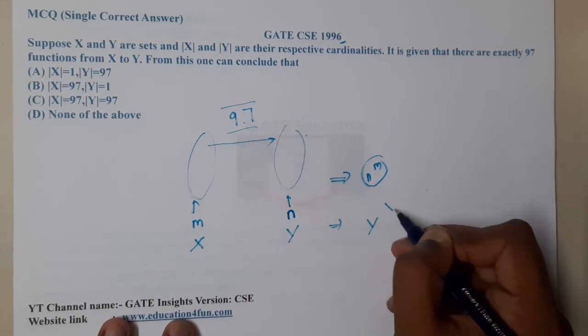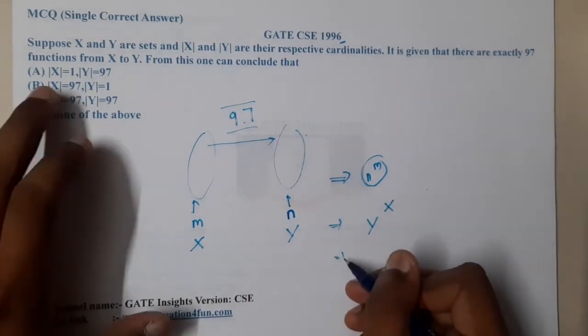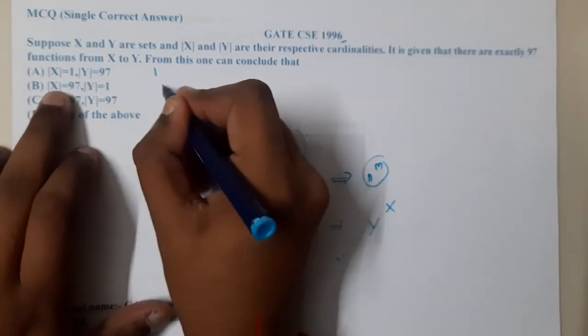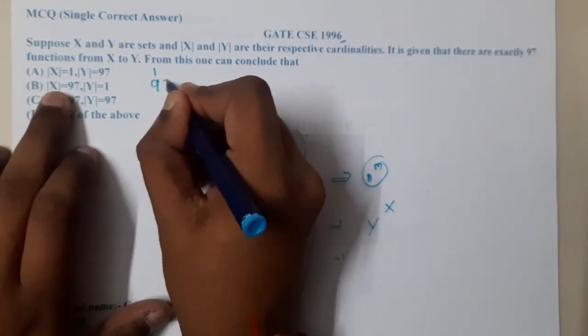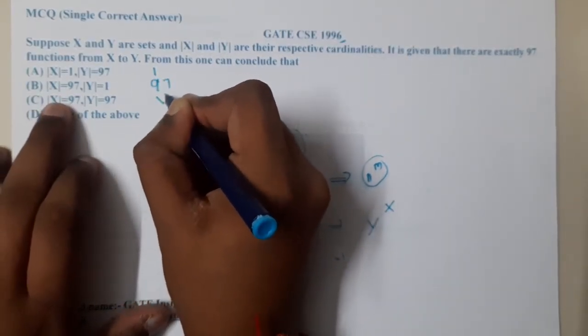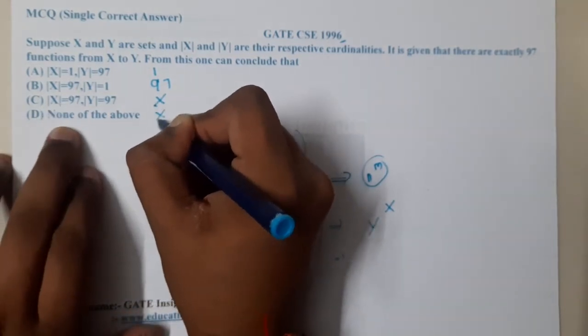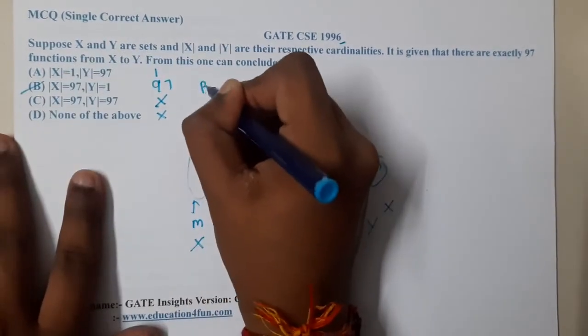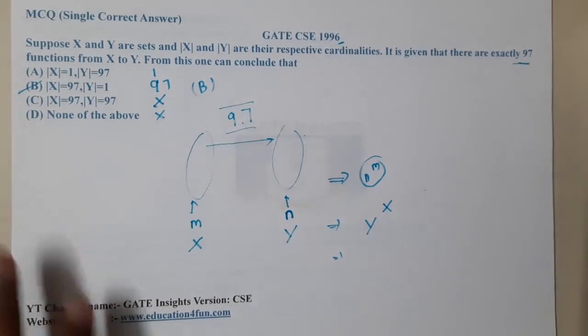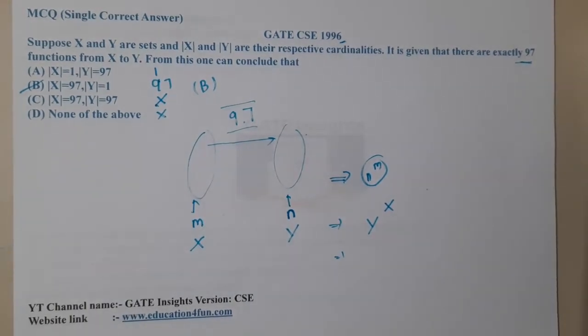So that is nothing but 1 power 97 will be 1, 97 power 1 will be 97, 97 power 97 is, I don't want to comment on it. Basically, option B will be the correct answer because they gave that there are exactly 97 functions.